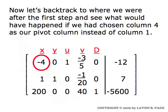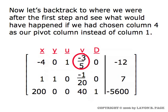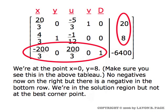In the last video we backtracked to see what the solution process would have looked like if we had made a different decision after the first step. Instead of using column one as the pivot column for our second step, what if we had looked at the number negative three-fifths, which signals that it's legal to use column four instead. When we backtracked and redid the last part of the problem by choosing our pivot element from that V column, we completed another step and arrived at a new tableau. No negative numbers in the final column signals that we are in the solution region, but a negative number in the bottom row says we've not yet found the best corner point.